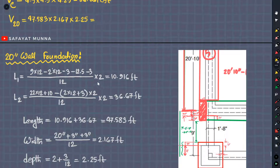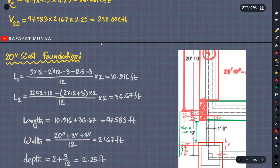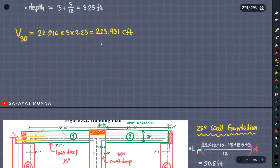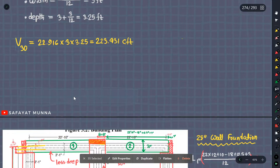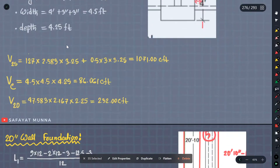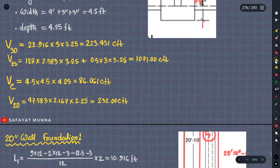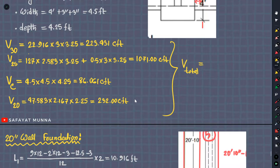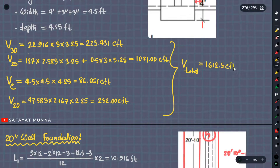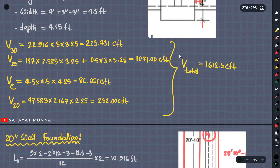So that calculation gives 232.00 CFT. So this one we write here — 1, 6, 1, 2 — 0.5 CFT. Okay.